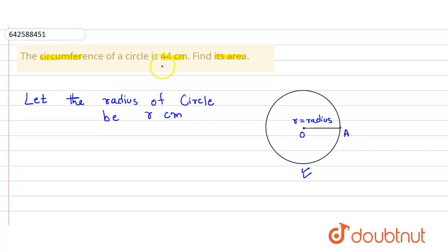So it is given that the circumference of circle is 44 cm. Here the circumference of circle, we know the formula for the circumference of circle is equal to 2 pi r where r is the radius.